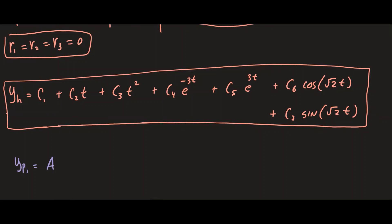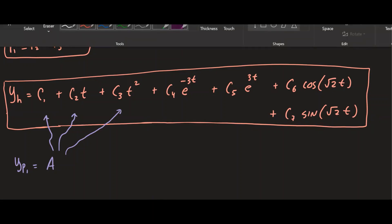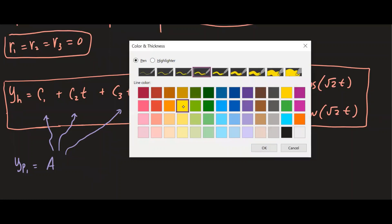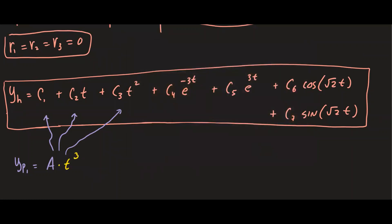We want yp1 to be independent of the homogeneous solution. A constant duplicates the c₁ term; multiplying by t duplicates c₂ t; multiplying by t squared duplicates c₃ t squared. So to avoid any overlap with the homogeneous solution, we must multiply this function by t cubed. That removes all duplication, giving us the form for the first particular function.